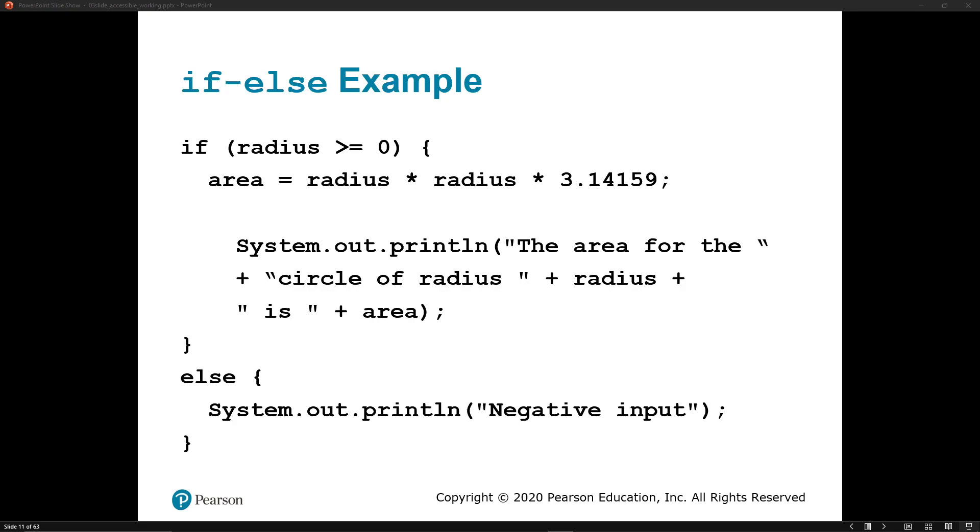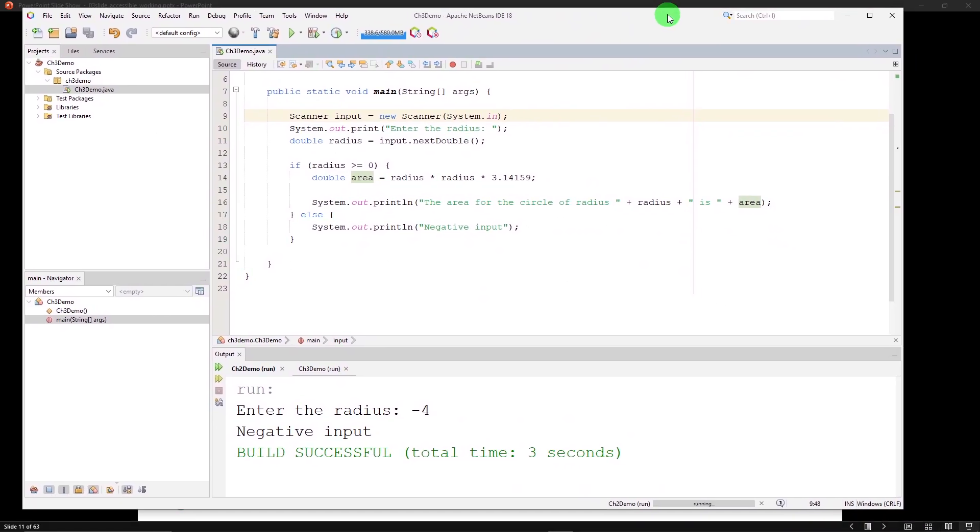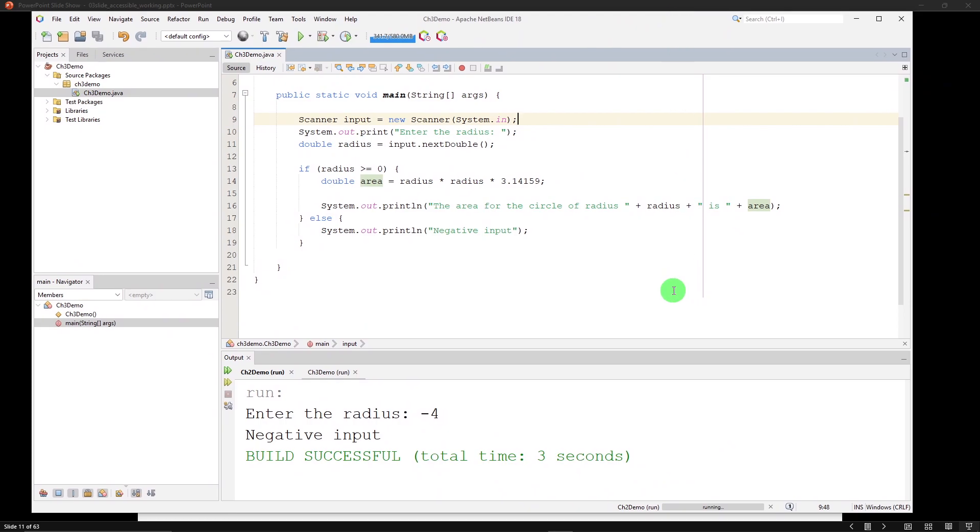Here's an example. Let's actually pull it up and actually run it and take a look at it. So this is asking the user for a radius. Enter the radius, and it's getting the next double, storing it in a variable called radius using all the things scanner, things that we've done before.